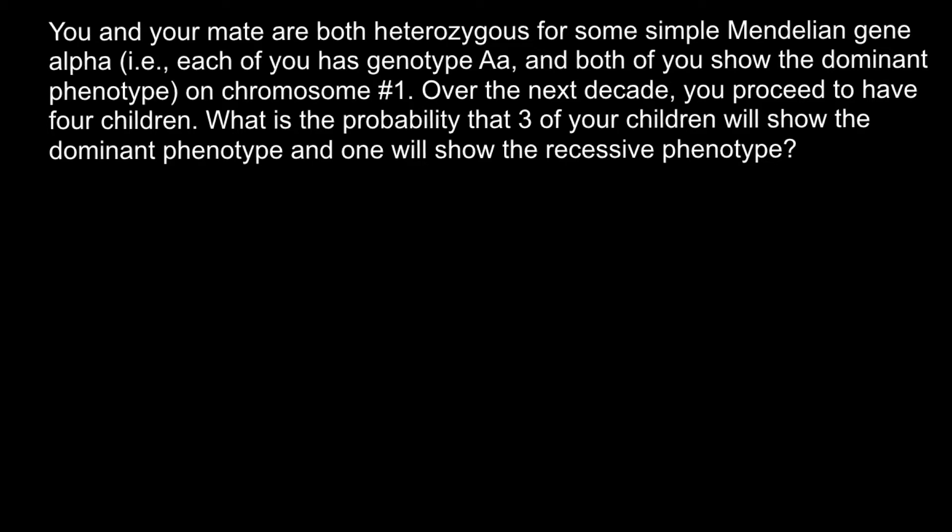Hello and welcome to Nikolai's genetics lessons. Today's problem is: you and your mate are both heterozygous for a simple Mendelian gene alpha. Each of you has a genotype that is capital A, small a — heterozygous — and both of you show the dominant phenotype on chromosome number 1. Over the next decade you proceed to have 4 children. What is the probability that 3 of your children will show the dominant phenotype and 1 will show the recessive phenotype?